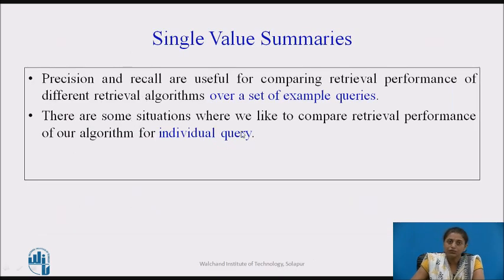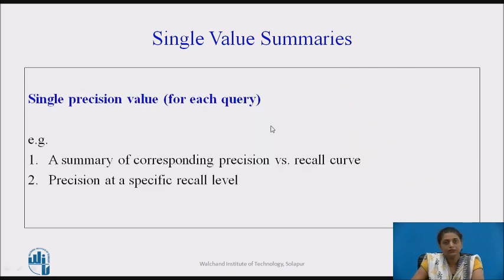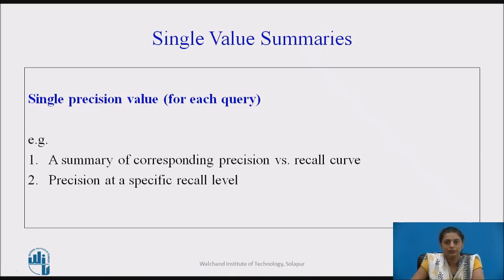There are situations where we want to compare retrieval performance of an algorithm for an individual query — to see which algorithm is performing better for a given query. For this we use single value summaries: a single precision value for each query. This can be a summary of the corresponding precision versus recall, or precision at a specific recall level.